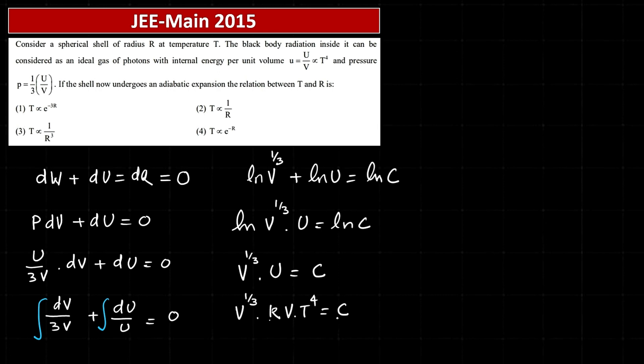Let me absorb this k into C, so that will be another constant, say C dash. So that will be simplified to V to the power 4 by 3 times T to the power 4 equals C dash.